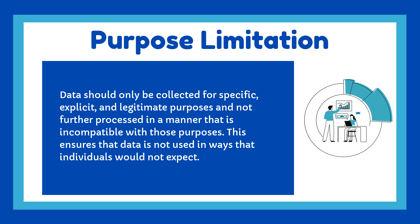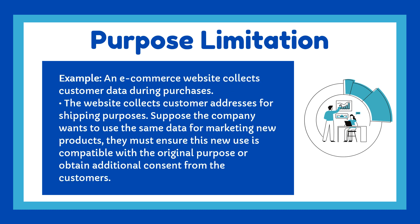2. Purpose Limitation. Data should only be collected for specific, explicit, and legitimate purposes and not further processed in a manner that is incompatible with those purposes. This ensures that data is not used in ways that individuals would not expect. Example: An e-commerce website collects customer addresses for shipping purposes. If the company wants to use the same data for marketing new products, they must ensure this new use is compatible with the original purpose or obtain additional consent from the customers.